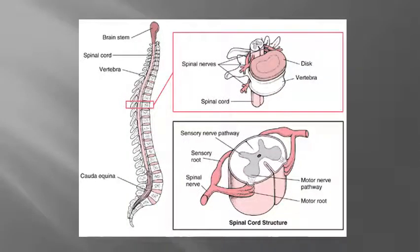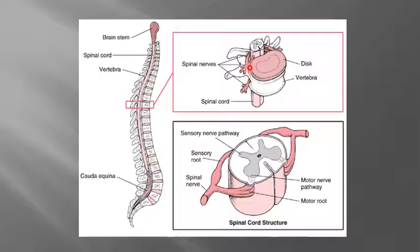Here we look at the actual relationship of the disc to the vertebrae. You can see here's your disc. The disc is actually composed of two parts: the outer portion, which is known as the annulus fibrosis — that's the portion that gives structure to the outside of the disc — and then inside, you have the nucleus pulposus, which is the more watery-type portion of the disc.